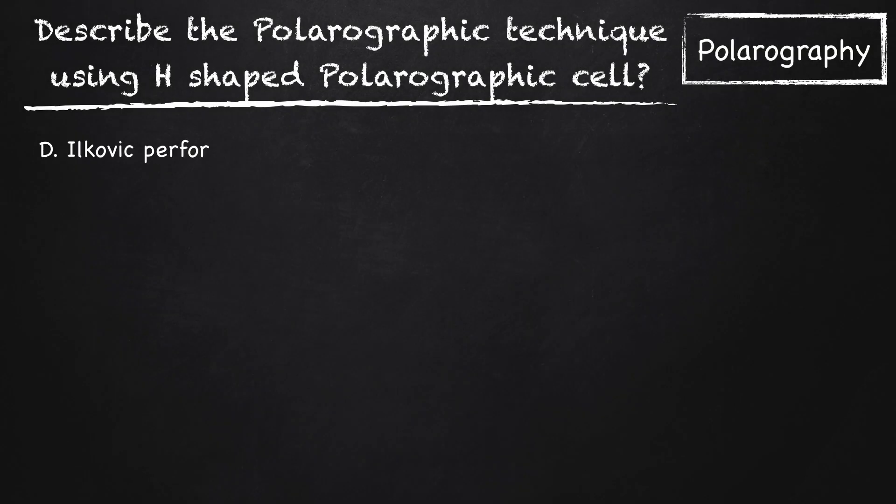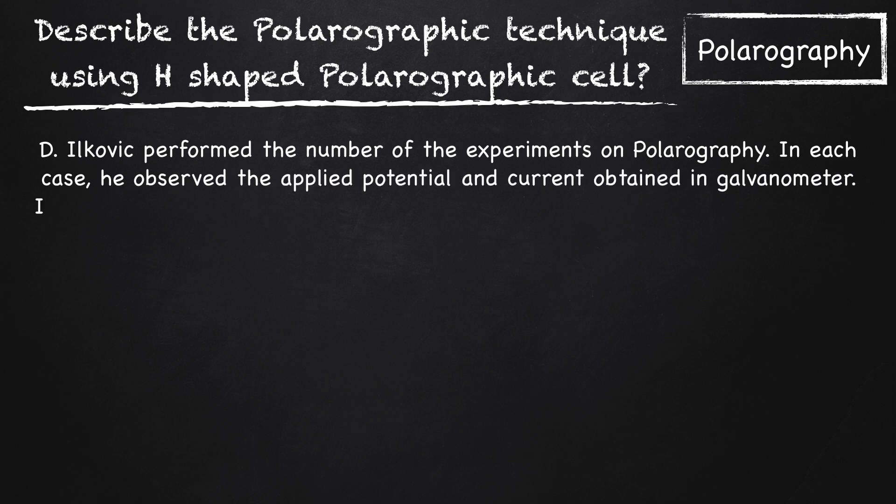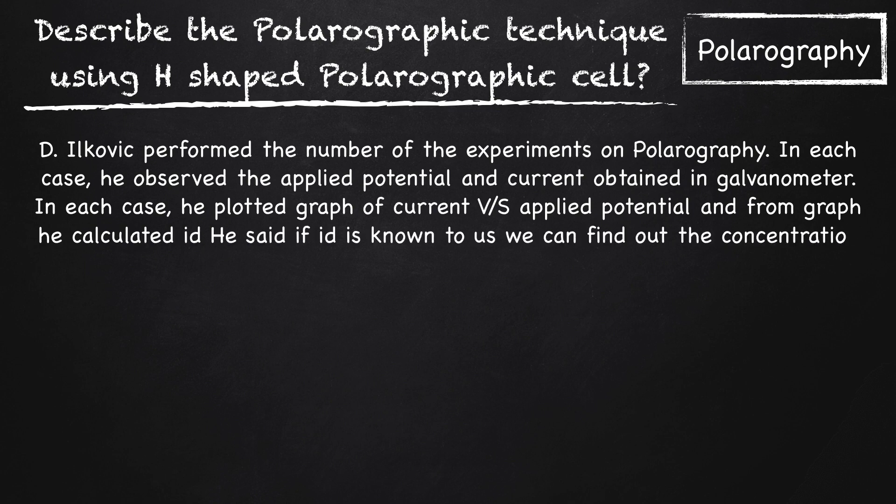D. Ilkovic performed a number of experiments on polarography. In each case, he observed the applied potential and current obtained in the galvanometer. He plotted graphs of current versus applied potential and from the graphs calculated diffusion current Id. He stated that if Id is known, we can find out the concentration of the experimental solution.